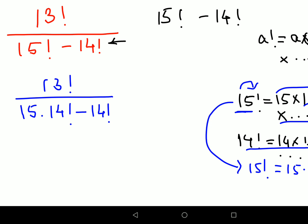Now what should be your next step? Your next step is to take common. We will keep 13 factorial as it is, and here we will take common 14 factorial. So I am left with 15 minus 1.